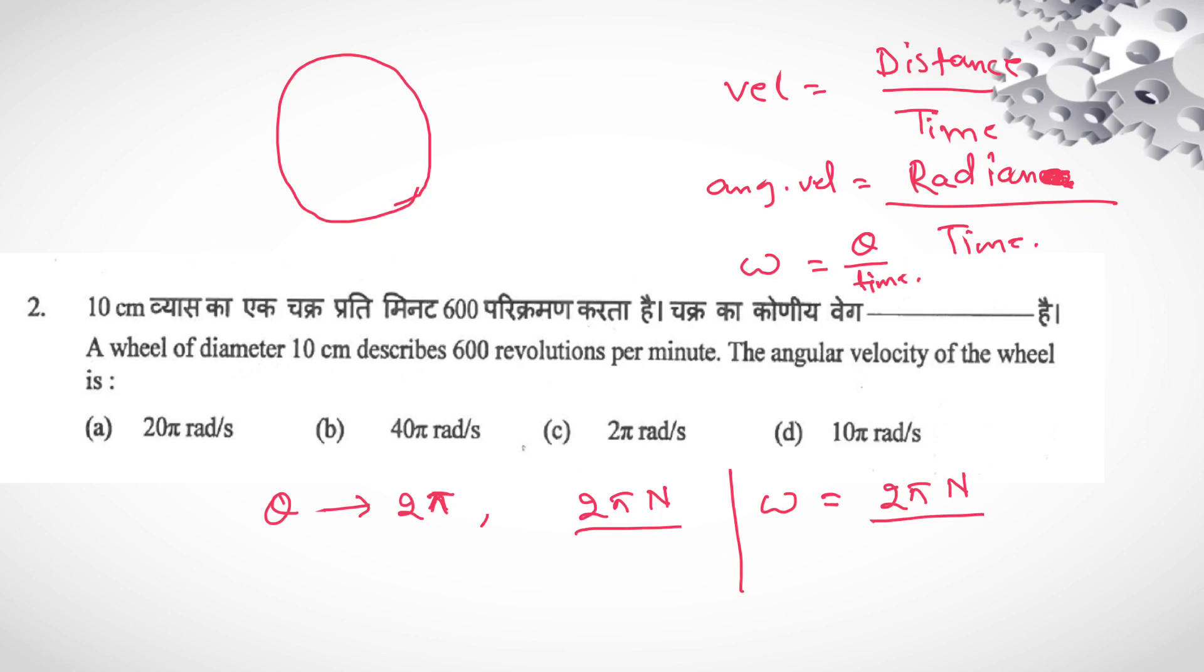Or you can write it as 2πn radian per second. If unit time you will take 1 second, then 2πn also. N normally they are giving in rpm. So you have to convert this one into rps. So this is 2πn by 60.